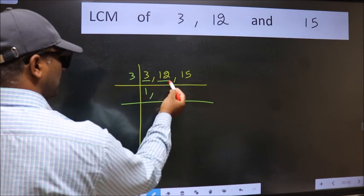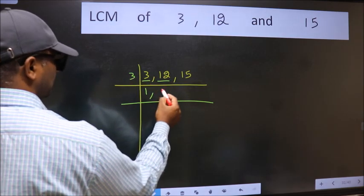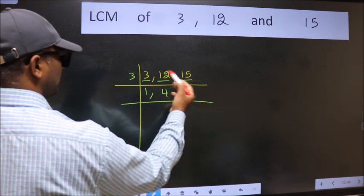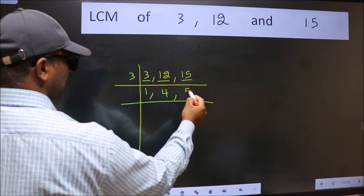The other number 12. When do we get 12 in 3 table? 3, 4 is 12. The other number 15. When do we get 15 in 3 table? 3, 5 is 15.